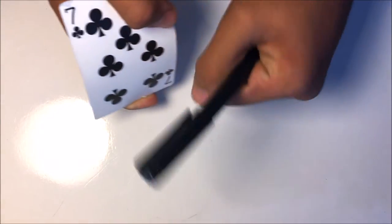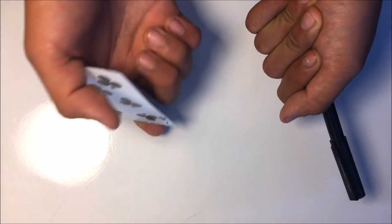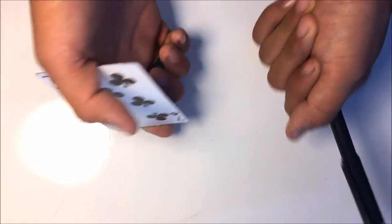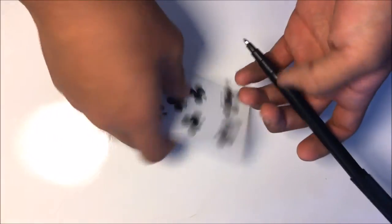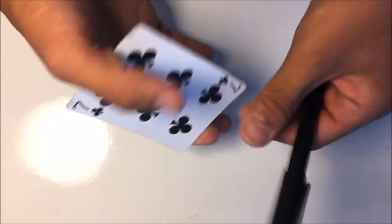So, now, to the normal eye, it just looks like you grabbed the pen and picked up the card. But, in reality, you pulled off the magnetic tip. To do this, just use the card as a cover.